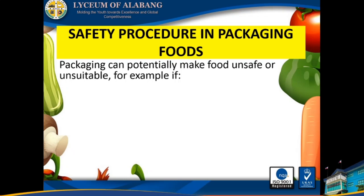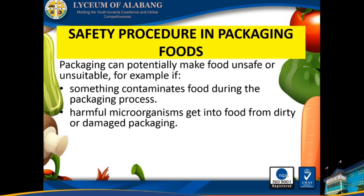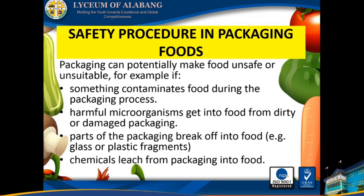Safety procedures in packaging foods. Packaging can potentially make food unsafe or unsuitable. For example, if something contaminates food during the packaging process, harmful microorganisms can get into food from dirty or damaged packaging. Parts of packaging can also break up into foods — for example, glass or plastic fragments.